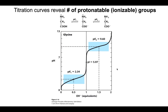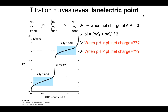Another thing we can determine for molecules with more than one protonatable group is the isoelectric point — the pH at which the net charge on that molecule is zero. Let's look at glycine again. Glycine can exist in three different states. Starting at lowest pH: the doubly protonated state. Increasing pH: the carboxyl group becomes deprotonated but the amino group, having a higher pKa, is still protonated. Increasing pH further: we reach the doubly deprotonated state. Let's look at which form has a net charge of zero.